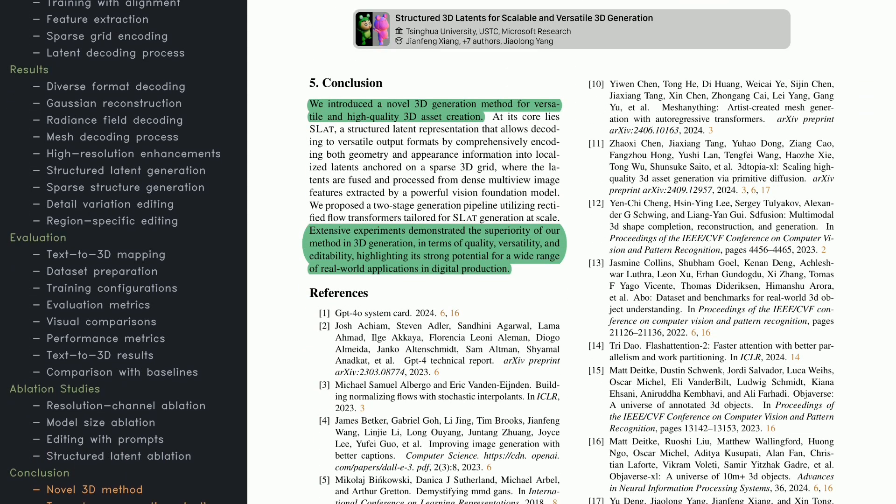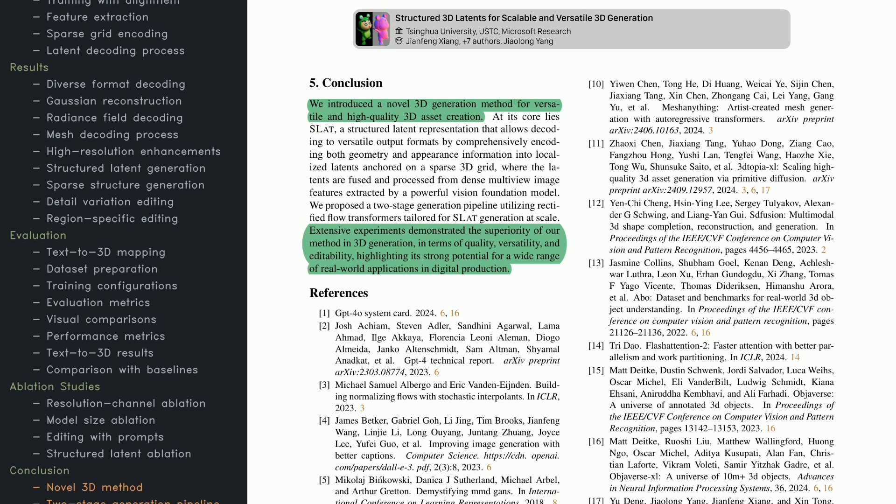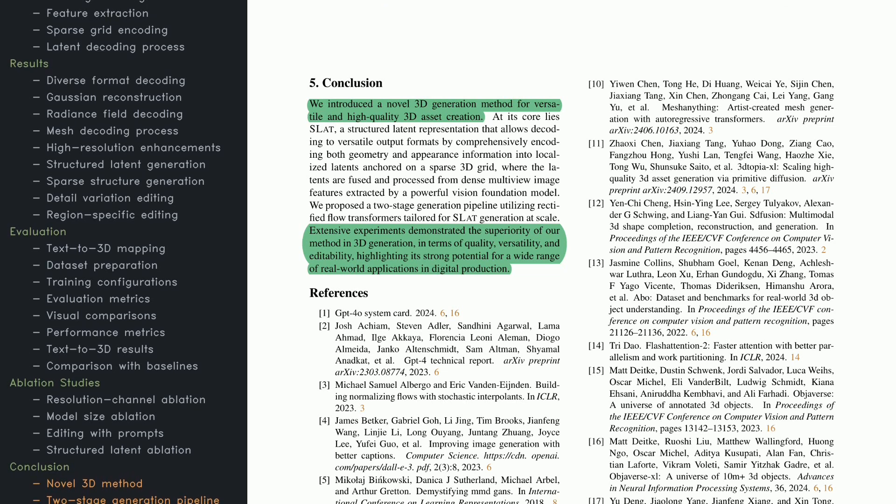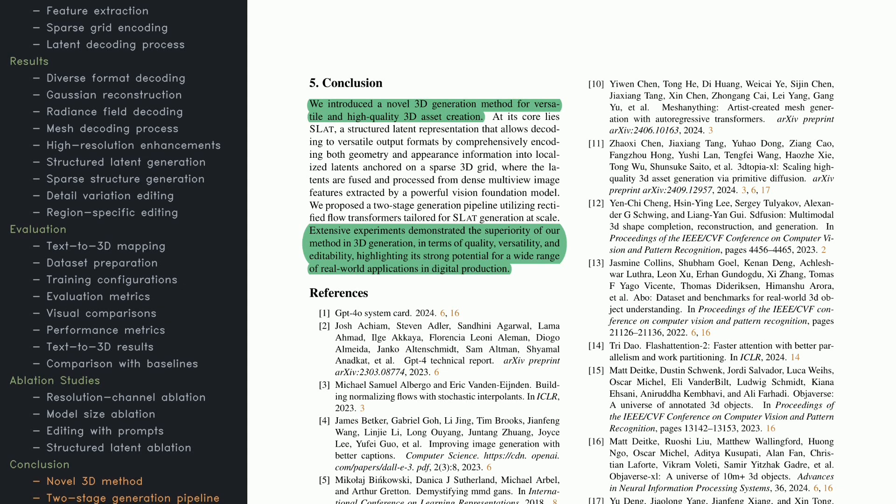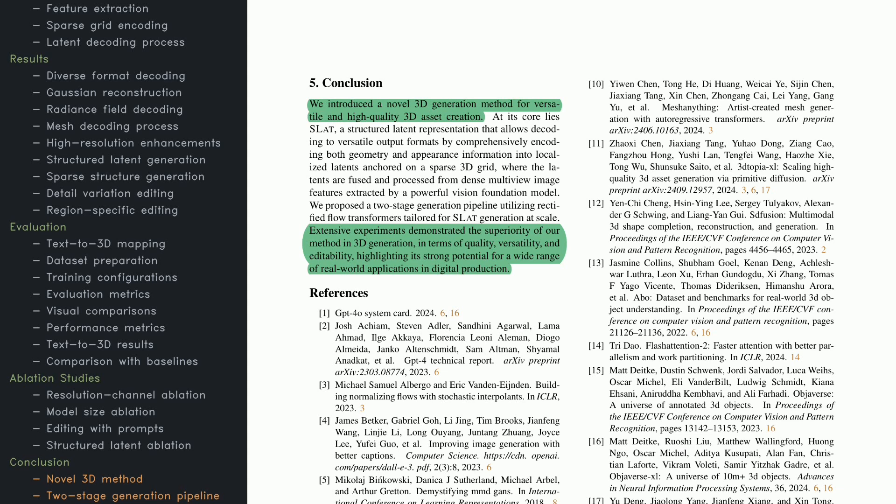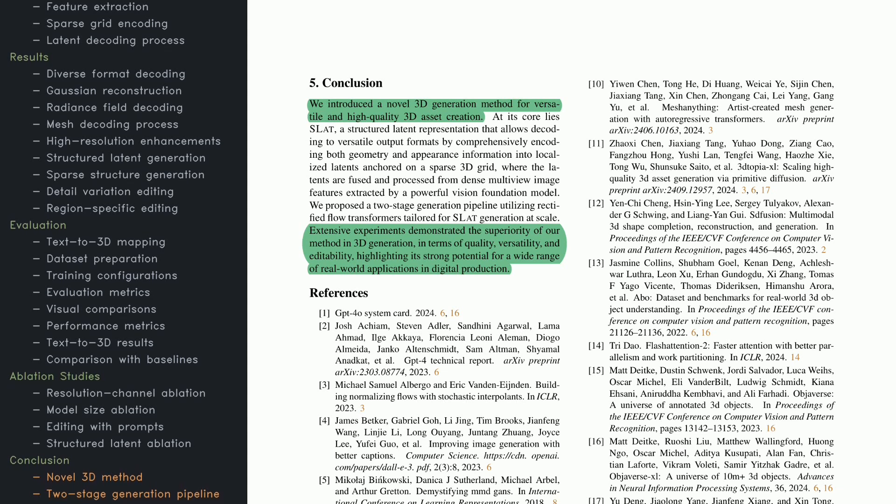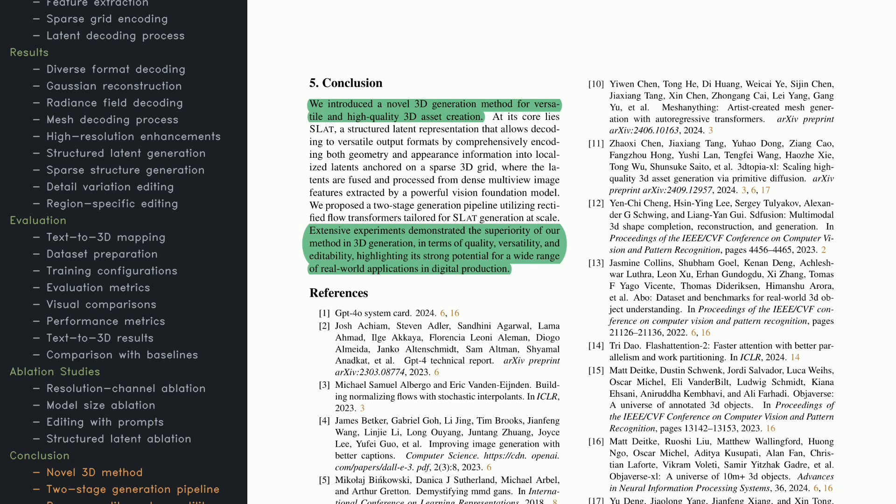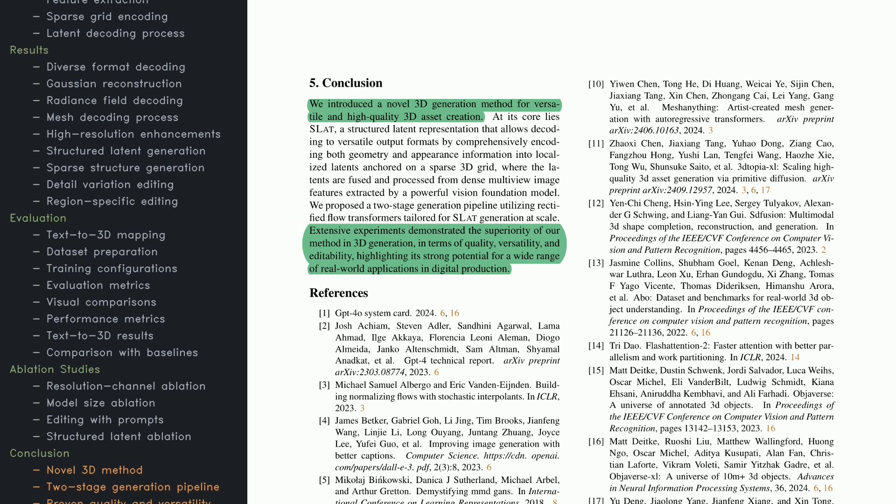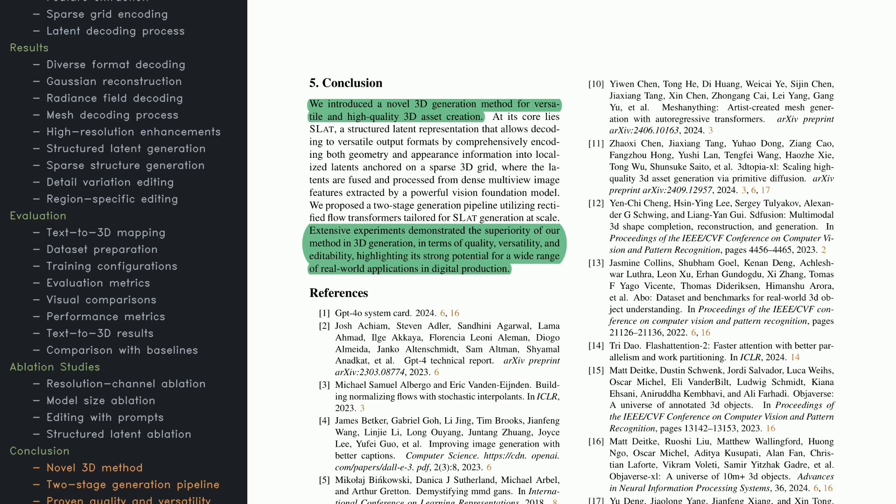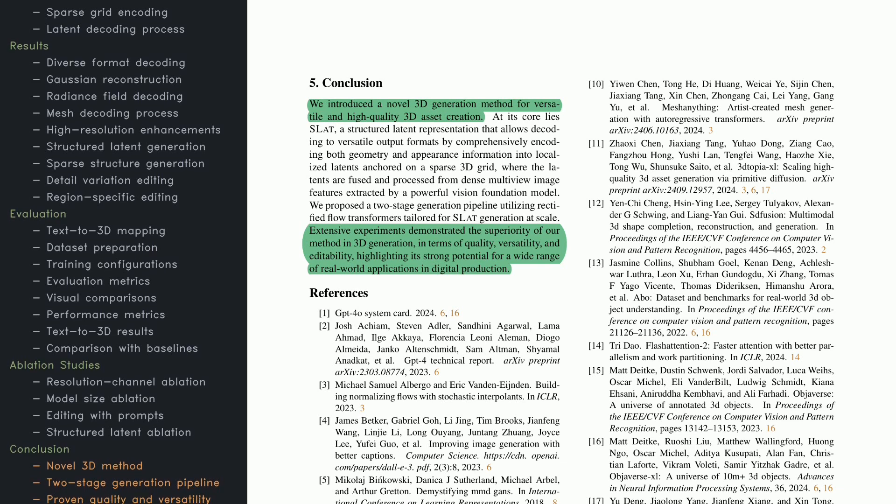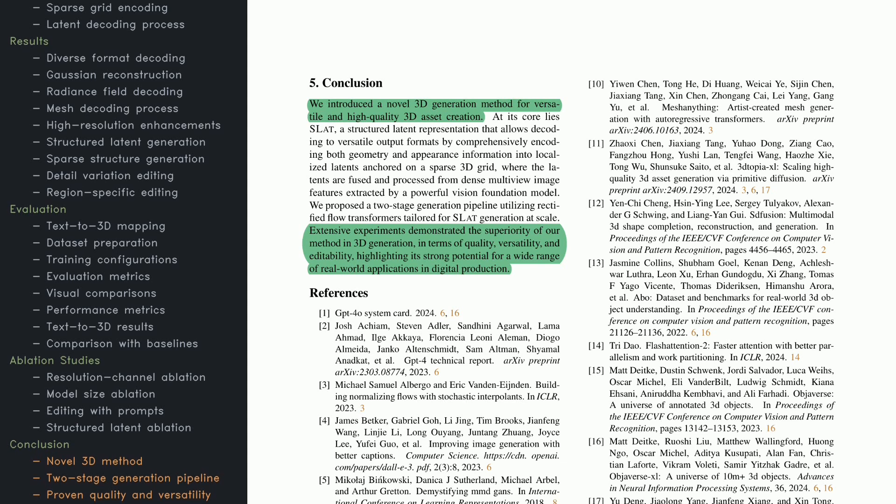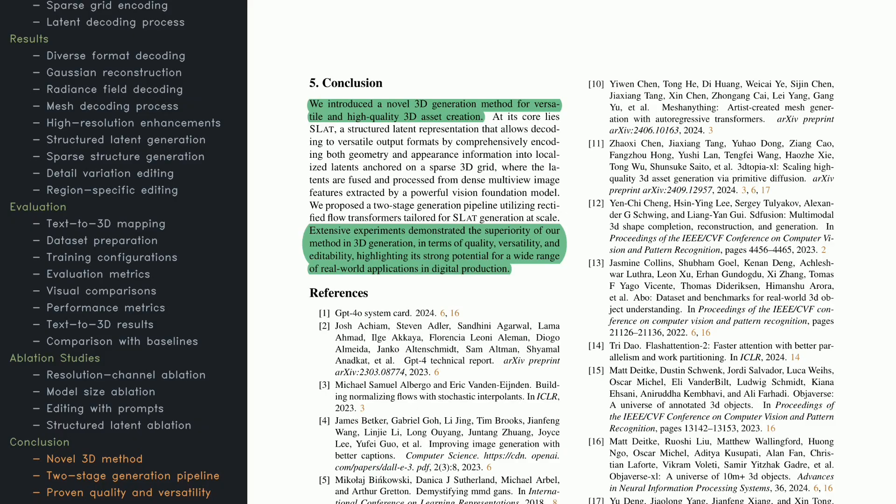In summary, this research presents a fresh way to produce high-quality, versatile 3D assets. The key innovation is the structured latent representation, which encodes both geometry and appearance into localized features on a sparse grid. This enables flexible outputs in formats like meshes, radiance fields, or Gaussian representations. The two-stage pipeline uses advanced flow transformers that work directly with structured latents, making the generation both powerful and easy to adapt. Extensive experiments show the method excels in quality, versatility, and editing options, making it a promising tool for areas like entertainment, digital design, and beyond. Thanks for following along. If you'd like to learn more, feel free to revisit any figures and examples.